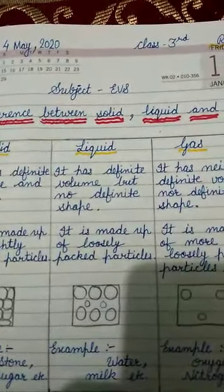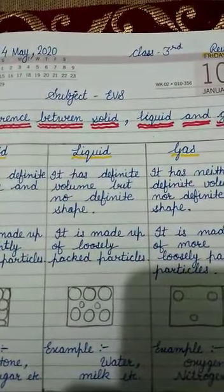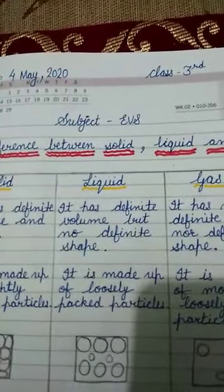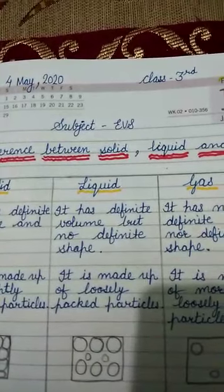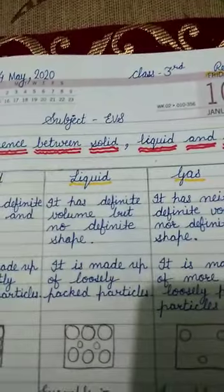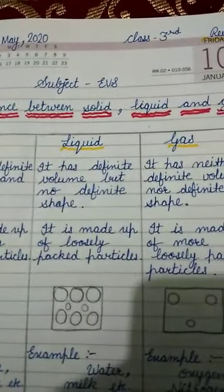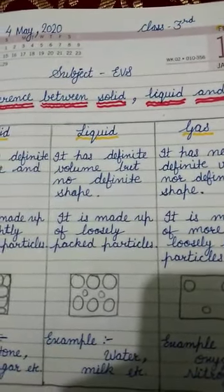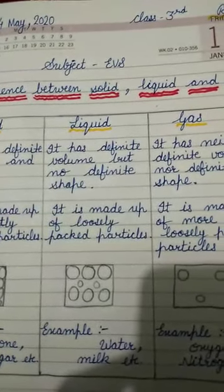Give me one example of liquid state. Students: water. Water is the example of liquid state. Now give me an example of gaseous state — oxygen gas, carbon dioxide gas. Solid particles are arranged tightly; there is no gap between them. Clear? Thank you.